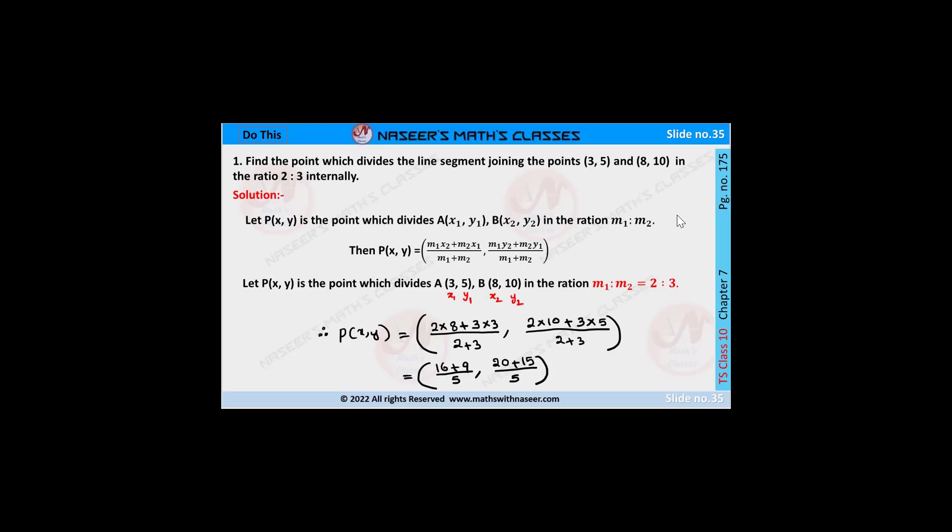Do this page number 175, chapter 7, coordinate geometry. Find the point which divides the line segment joining the points (3,5) and (8,10) in the ratio 2 to 3 internally.